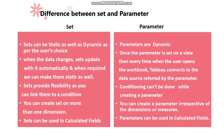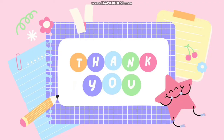These are the differences between sets and parameters. The major difference is that sets are independent — they can be used even without using them in calculated fields and will work on their own. Parameters, on the other hand, won't work without being used in a calculated field. This is the major difference between a set and a parameter.